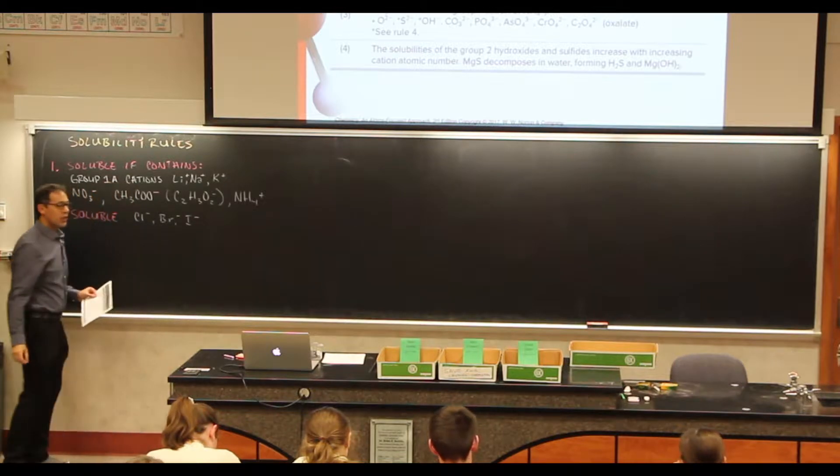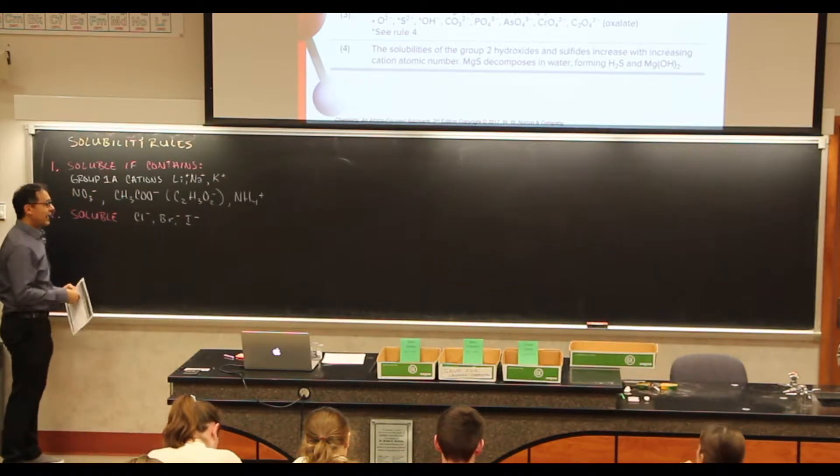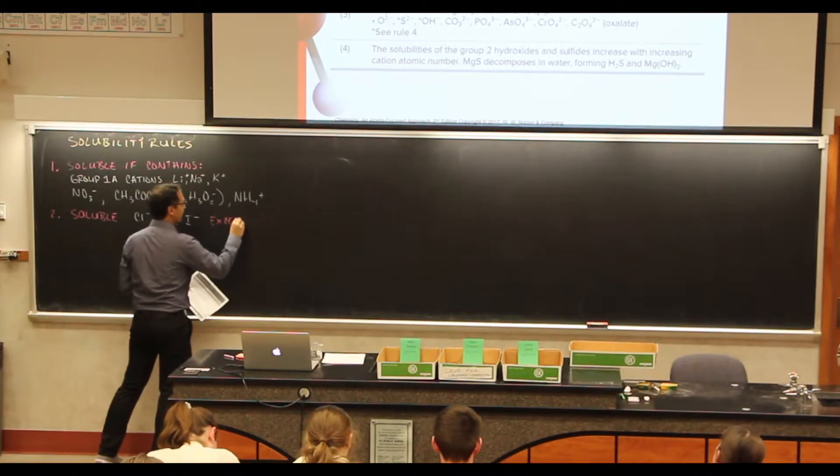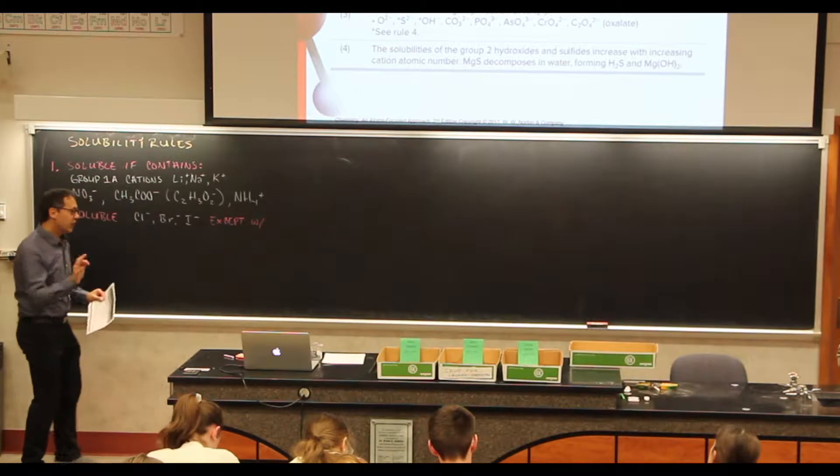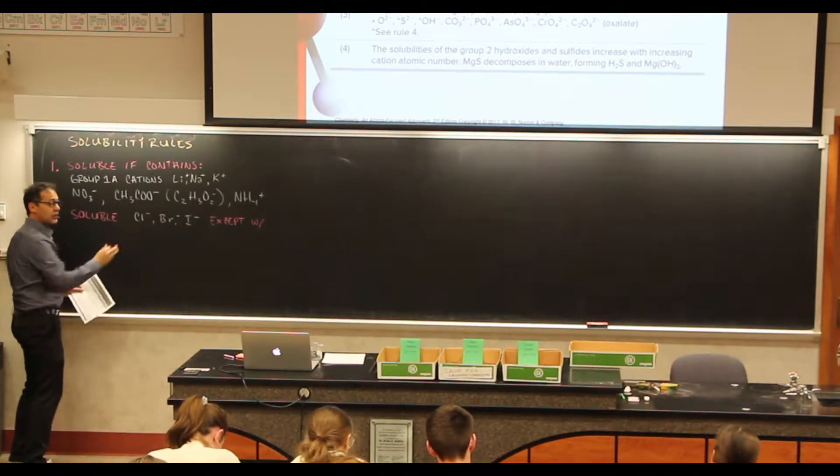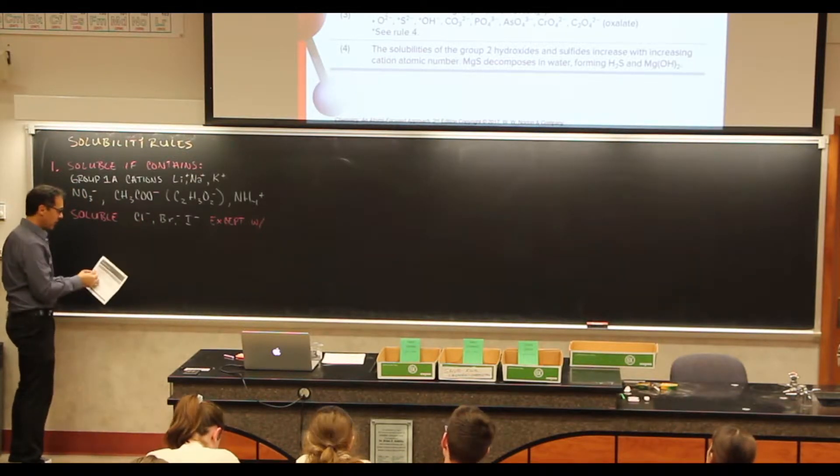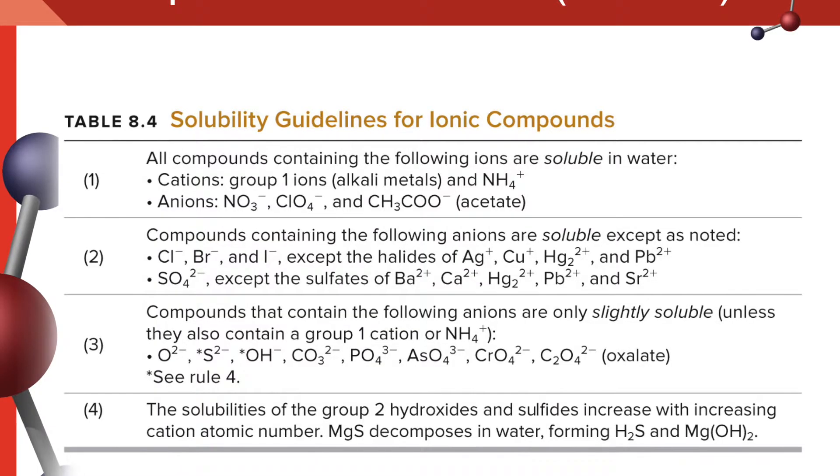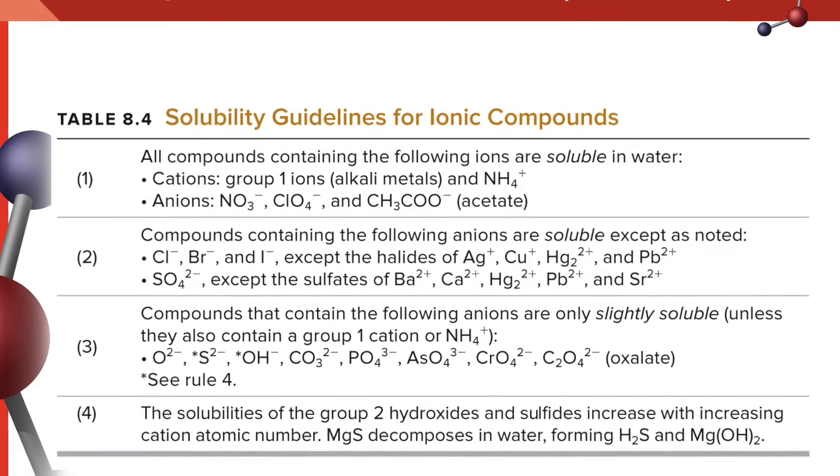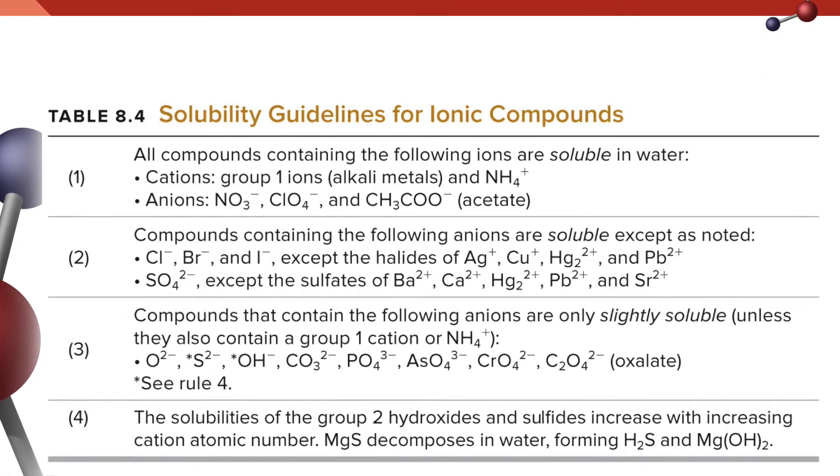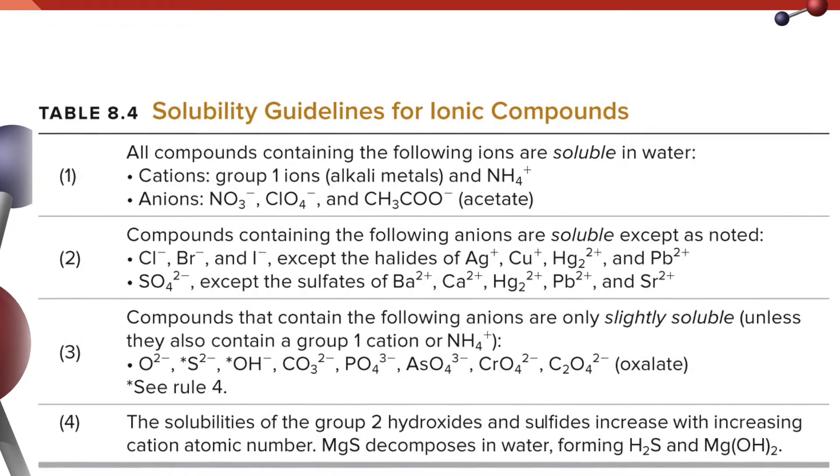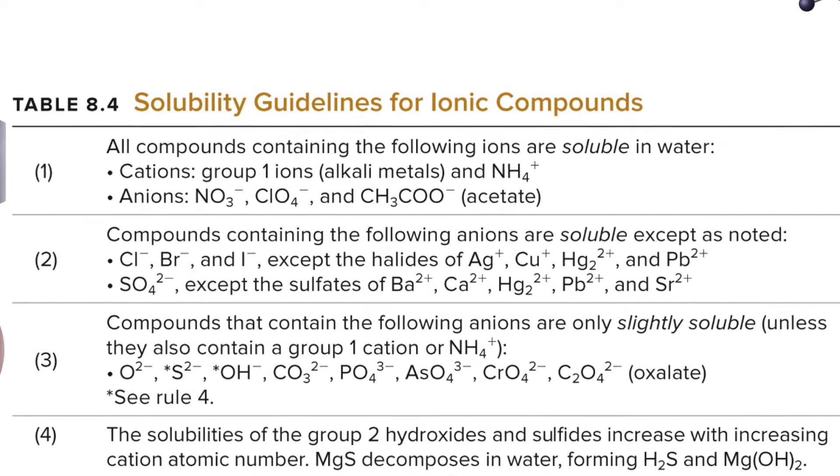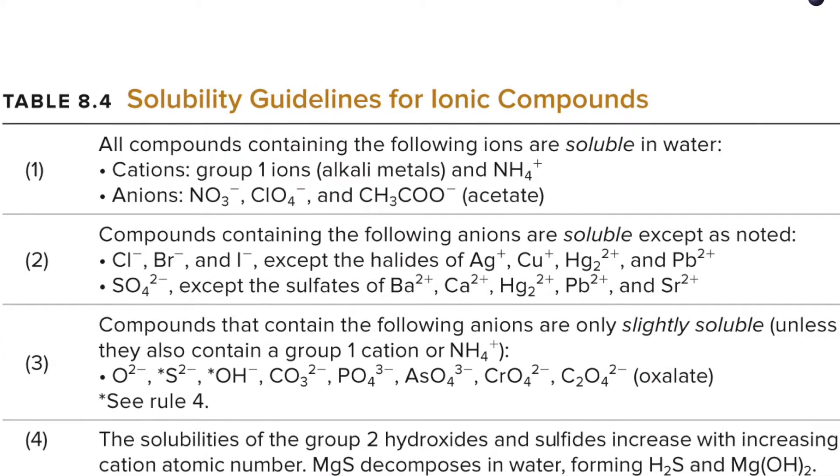These things are soluble except with. So if these other things are present with these, then it is no longer soluble. And these exceptions are silver ion, copper. Notice this is just a copper with plus one, not plus two. And mercury and lead.